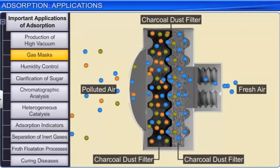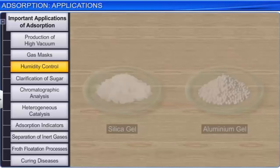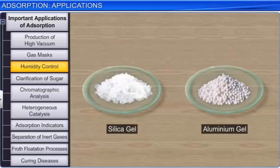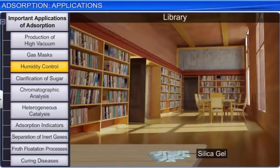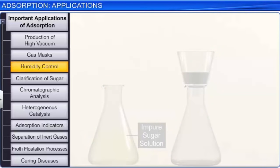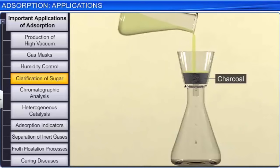Gas masks used by miners in mines provide protection from both particulate matter and poisonous gases, and are based on the phenomenon of adsorption. They contain activated charcoal or a mixture of adsorbents that preferentially adsorb large volumes of poisonous gases, thereby purifying the air for breathing. Silica and aluminium gel are used to keep relative humidity as low as possible; they absorb moisture from the air, thereby preventing damage to electronic devices and musical instruments. Silica gel is also used for preservation to control relative humidity in museums, libraries, and exhibitions.